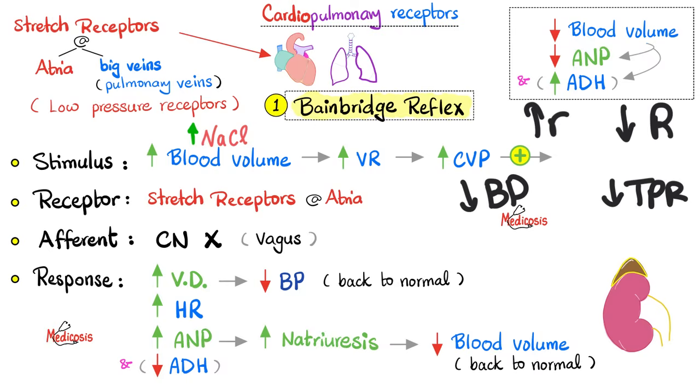That's the beauty of the Bainbridge reflex. The receptors are found in the atria and in the big veins, such as the pulmonary veins. And that's it for the Bainbridge reflex.